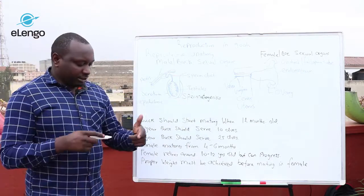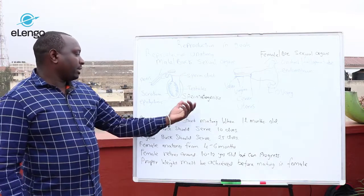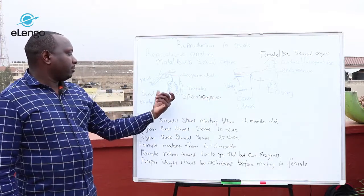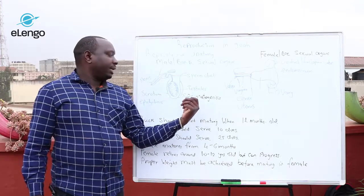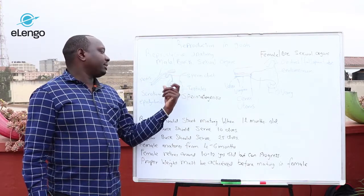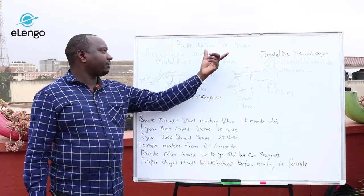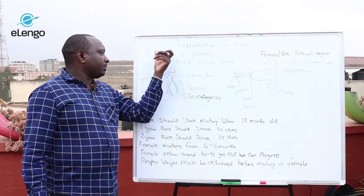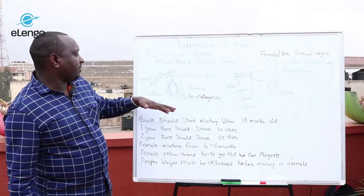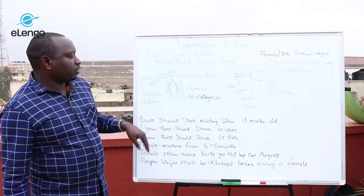Spermatogenesis basically means the making of sperms. During this process, it requires a temperature lower than the body temperature of the buck, which is at 37.5°C. So it requires a lower temperature of about 35 degrees.